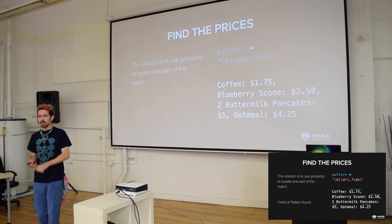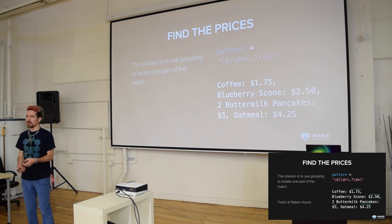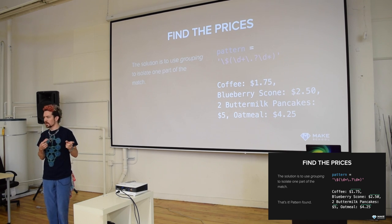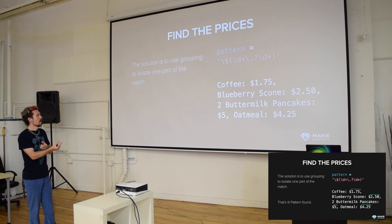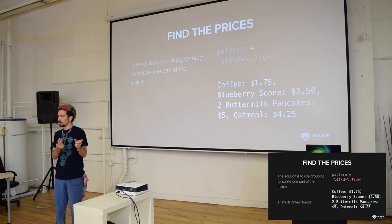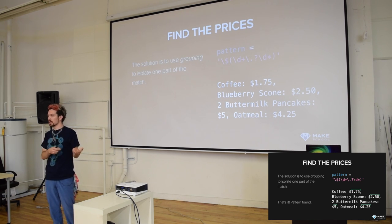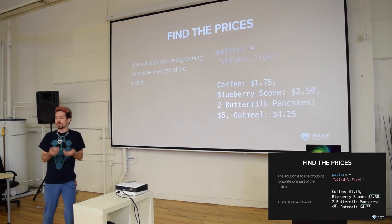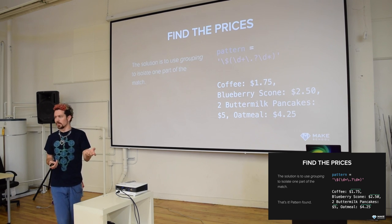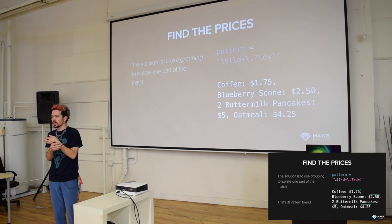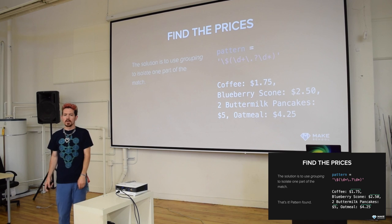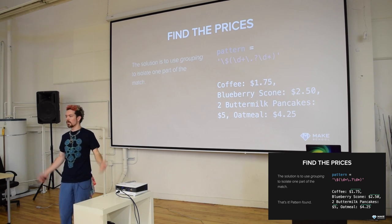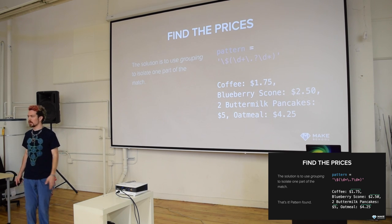Regular expressions are good for finding and matching things, and also for changing a string. For example, to switch dollars and cents - something like a puzzle some of you worked on - you can use matching to grab two groups and then in the replacement string put the second group first, then a period, then the first group. This lets you immediately swap prices and spit out a new string or text file. You can also grab just dollars and ignore cents if you want to round all prices, or grab 'dollars.cents' and interpret it as a floating point number.